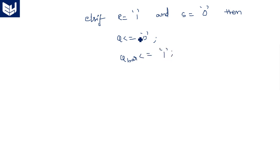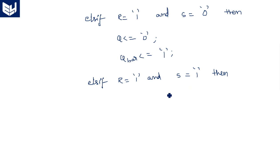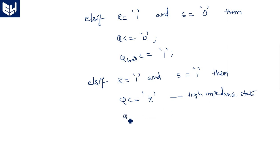Q_bar is assigned '1' because the output is reset. Then else if R = '1' and S = '1', then Q is assigned 'Z' — Z means high impedance state — and Q_bar is also assigned 'Z', which is also high impedance state.